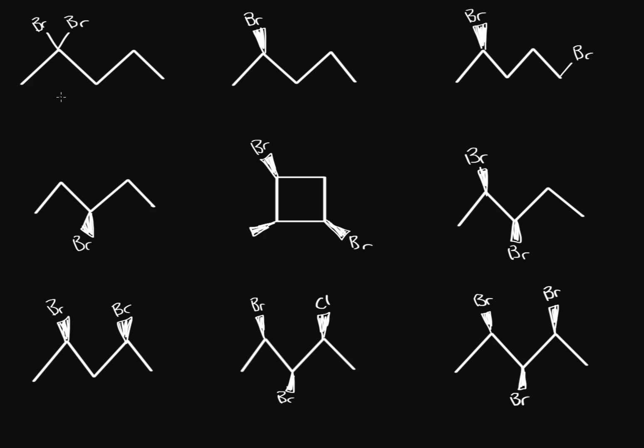In this practice, we're going to figure out how many stereoisomers we have, and to do that, we have to figure out how many chiral carbons we have. A chiral carbon is a carbon that has four different groups. So if it was connected to a hydrogen, a bromine, a chlorine, and a methyl, that's four different groups, so it makes it a chiral carbon. Once you figure out your number of chiral carbons, you just plug it into this equation: 2 to the n, where n is the amount of chiral carbons we have.